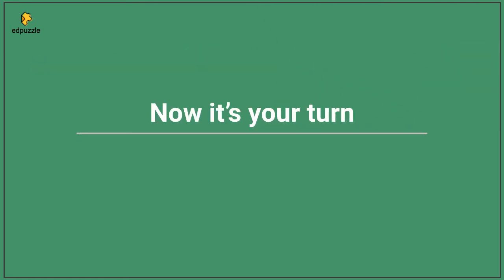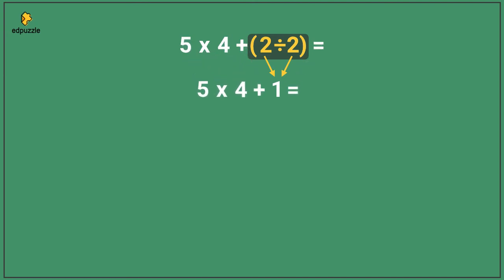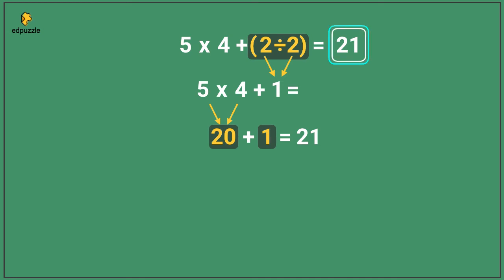Now that we have practiced, you try this problem. To solve this problem, you first have to solve 2 divided by 2, which equals 1. Bring down 5, the multiplication symbol, 4, and the addition symbol. Next, you solve 5 times 4, which equals 20. Bring down the addition symbol and the 1. Finally, 20 plus 1 equals 21, so the value of the expression is 21.